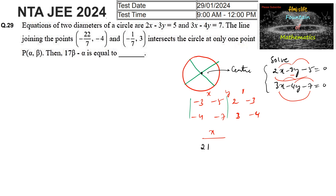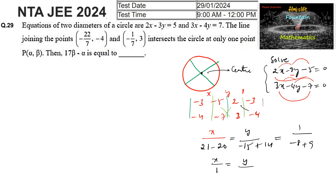So x upon: the determinant gives minus 3 times minus 7 equals 21, minus minus 4 times minus 5 equals 20, so 21 minus 20 equals 1. For y: minus 5 times 3 is minus 15, minus of minus 7 times 2 is plus 14, giving minus 1. For the constant: 2 times minus 4 is minus 8, and 3 times minus 3 is minus 9, so minus 8 plus 9 equals 1. Thus x upon 1 equals y upon minus 1 equals 1 upon 1.